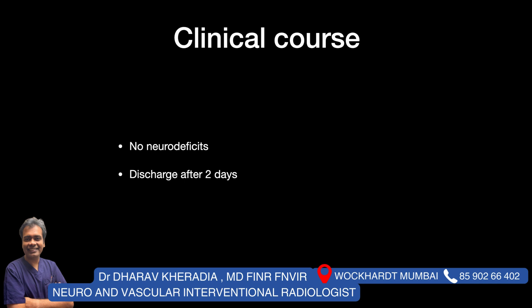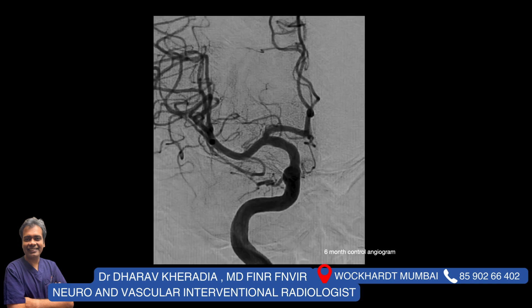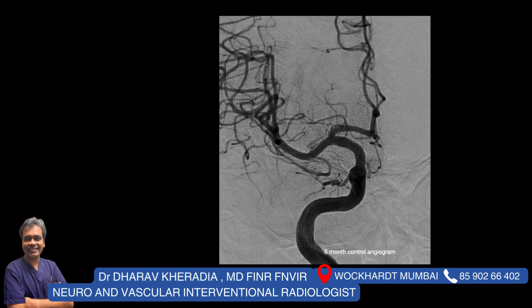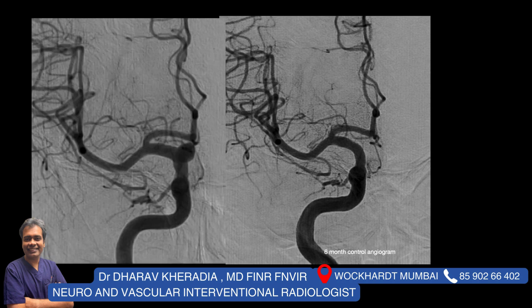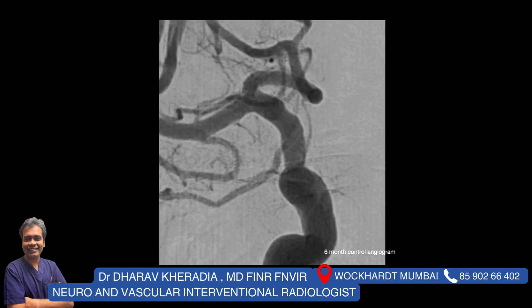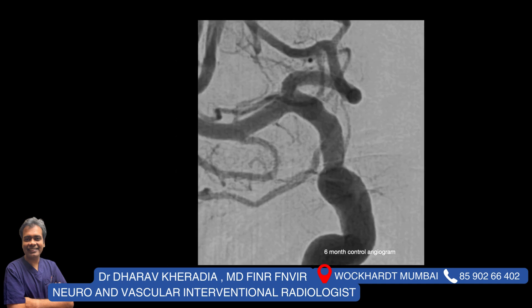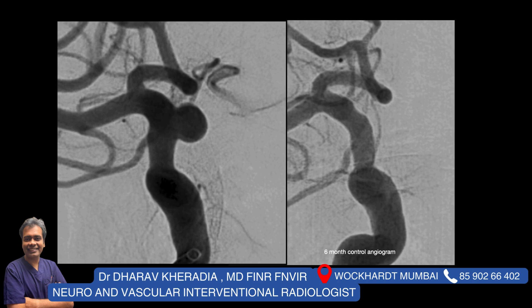The patient was discharged after two days without any complications and asked for follow-up after six months. This is the six-month control angiography — you can see the aneurysm has completely disappeared and is completely cured. Comparing the picture six months before versus six months later, you can't say there was any aneurysm here before. This is another projection showing complete cure of the aneurysm by flow diverter stenting. Thank you.